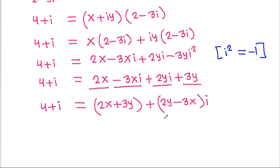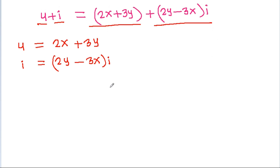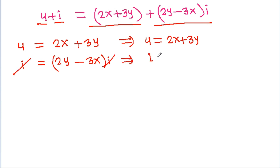Comparing real parts: 4 = 2x + 3y. Comparing imaginary parts: 1 = 2y - 3x.